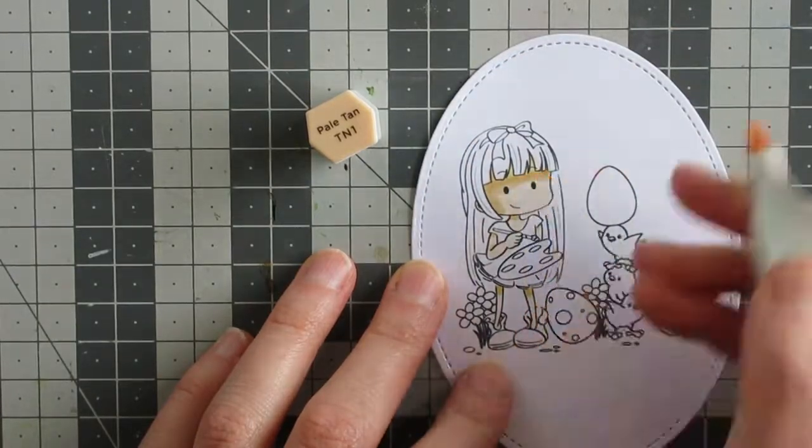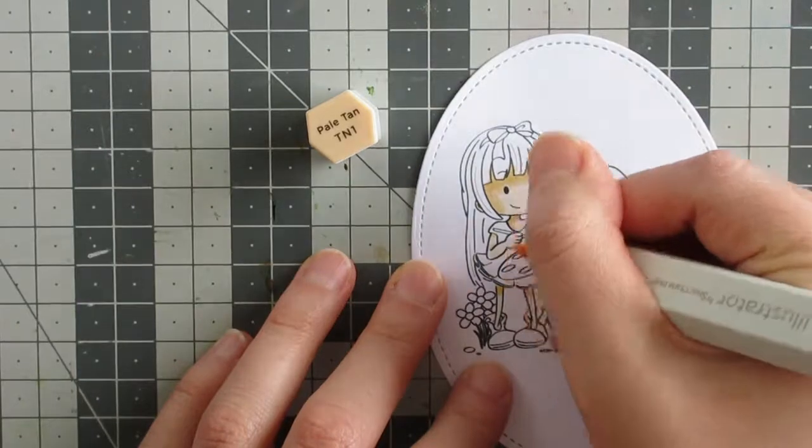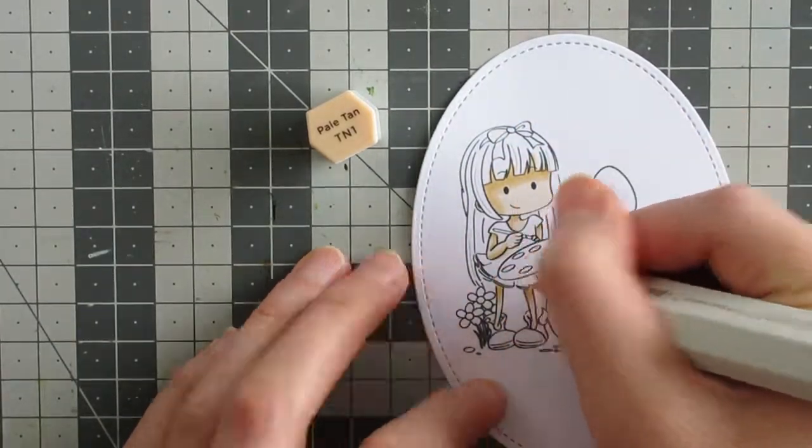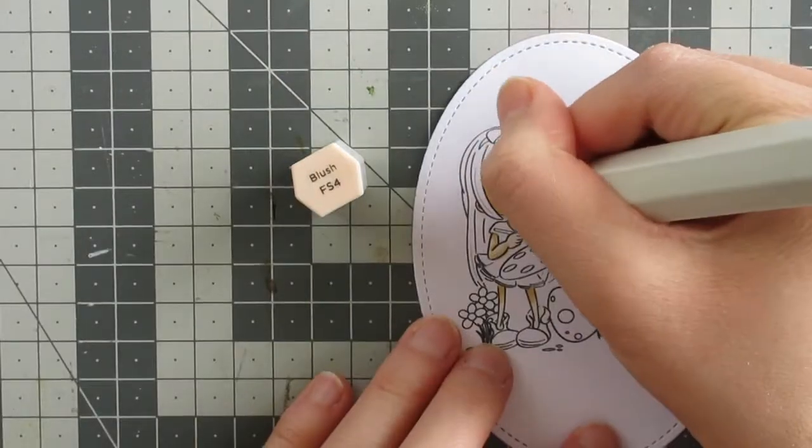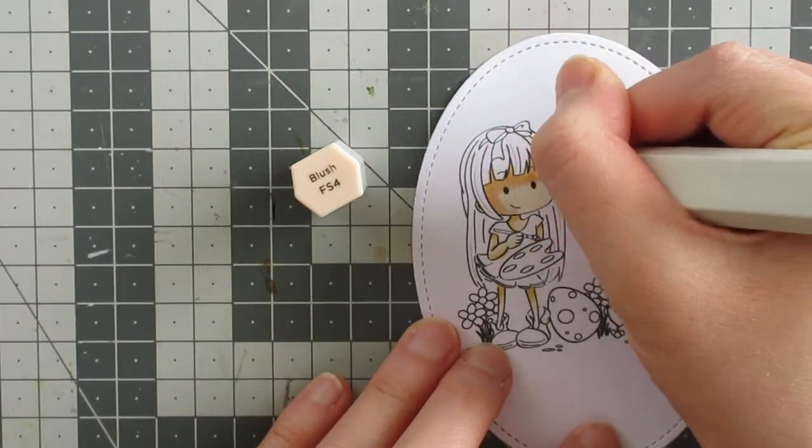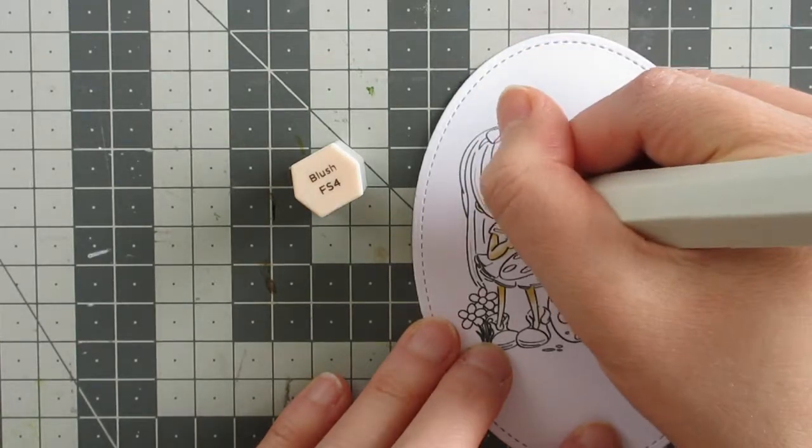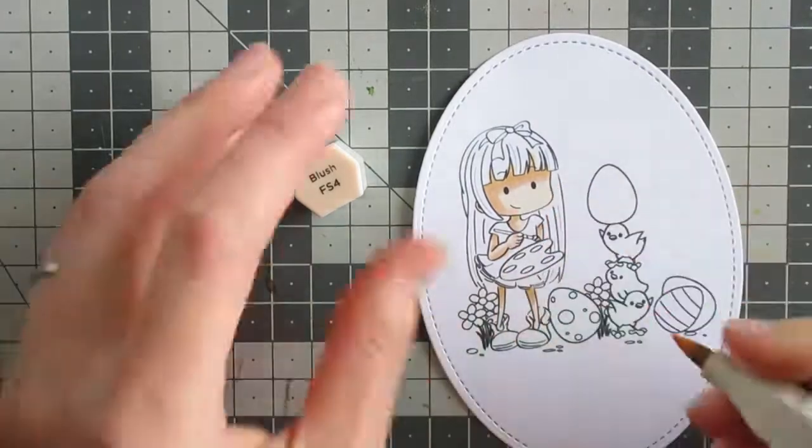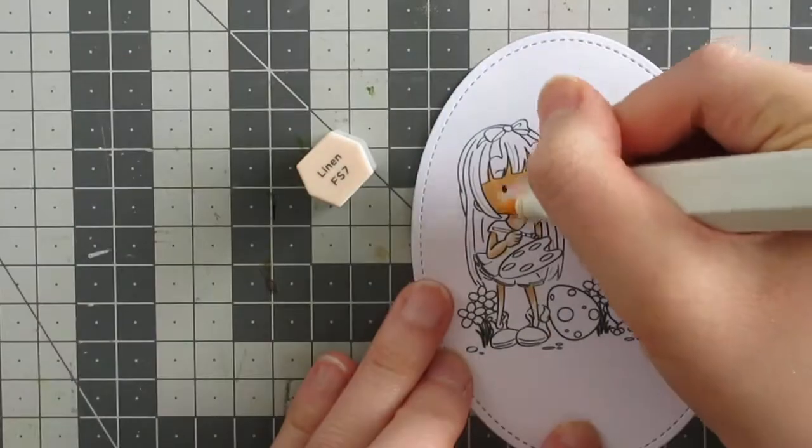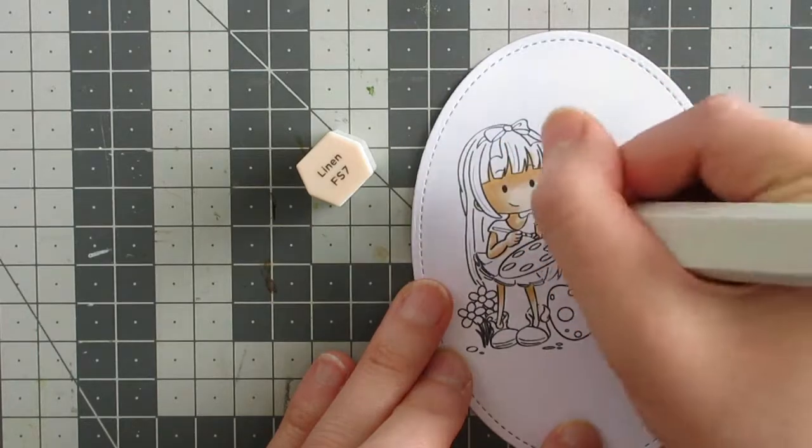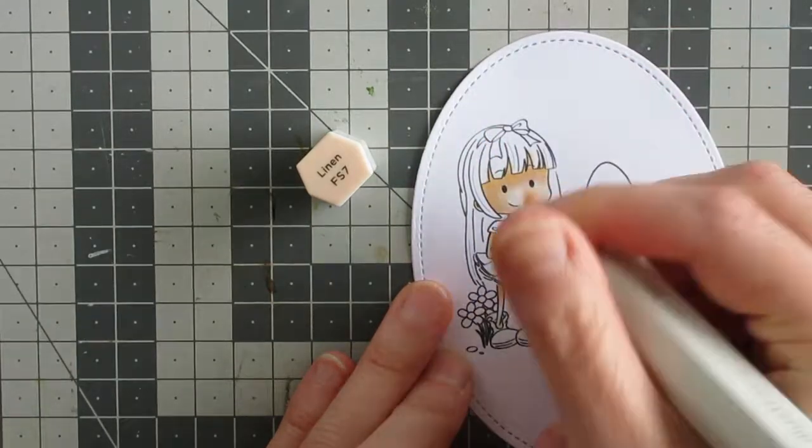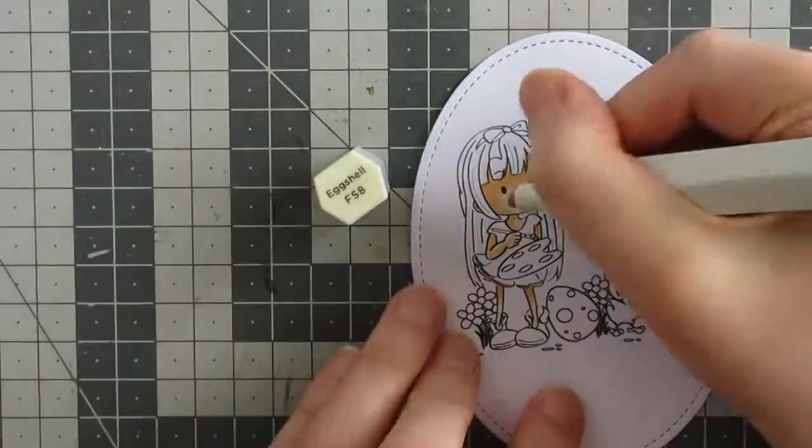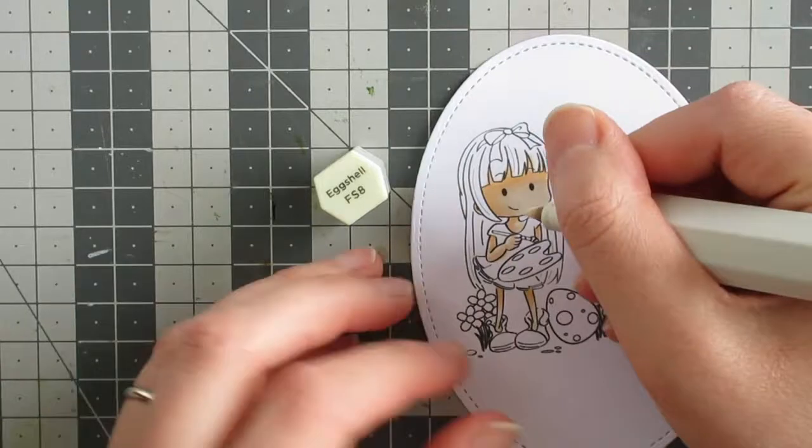I will start with skin which is what I tend to do when I'm coloring an image with a person. I'm using spectrum noir markers here and all the lids are to the side so you can see what colors I have used if you want to recreate my coloring. This is my go-to skin color. My darker colors I sometimes vary a little bit but for the most part I stick with this just because it's what I'm familiar with. I'm just putting on the finishing touches with my lightest color.